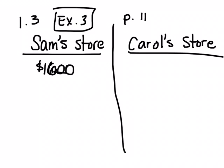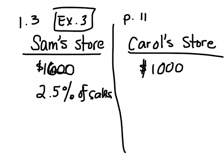Plus they get what? And then you get 2.5% of the sales, right? So what about Carol Store? How are their earnings based on what? What do you make at Carol Store? $1,000 plus they get 5% commission, so 5% of the sales.